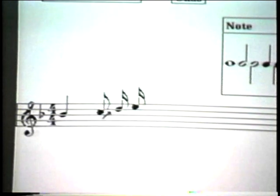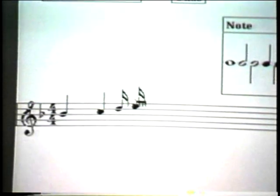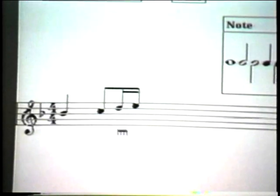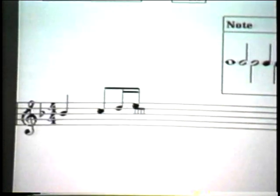To beam notes together, I start on a note, draw a horizontal stroke, and then touch other notes that I wish to beam to. If I make an S on a note, that sharpens it. And a B on a note flattens it.